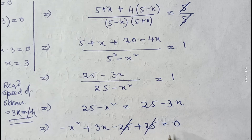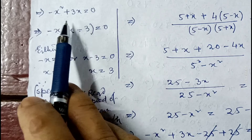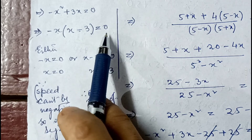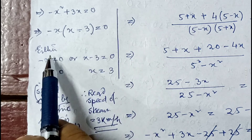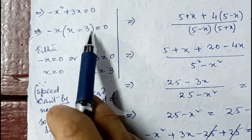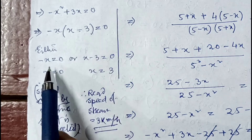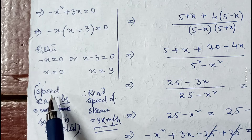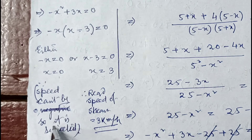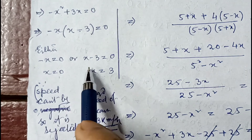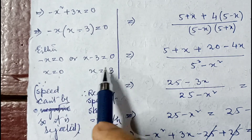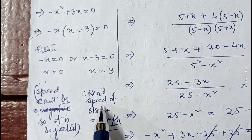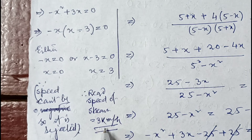Rearranging: minus x² plus 3x = 0. Taking minus x common: x(x minus 3) = 0. So either x = 0 or x = 3. Since the speed of the stream cannot be zero, x = 0 is rejected. Therefore the required speed of the stream is 3 kilometer per hour.